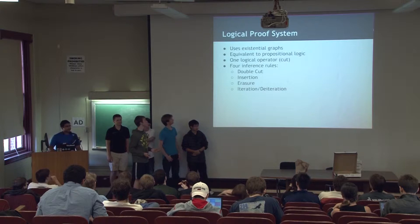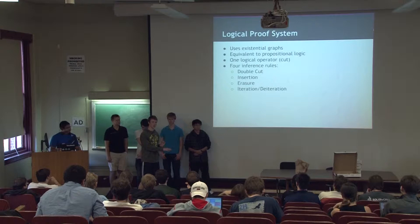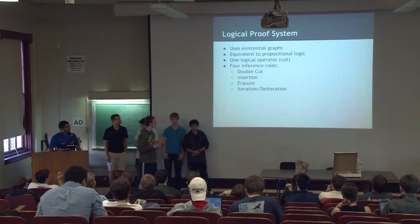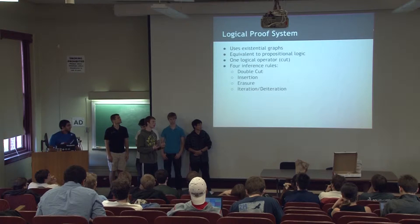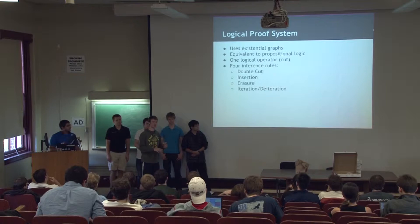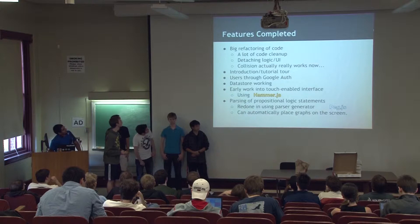Okay, Fierce Logic, otherwise known as existential graphs, is a logical proof system. It's equivalent to propositional logic — any statement you have in propositional logic is an equivalent statement in existential graphs and vice versa. It has one logical operator, which is a cut, which goes around variables. And if two variables or two graphs are next to each other, it's just implicitly a conjunction. There are four inference rules: double cut, insertion, erasure, and iteration/de-iteration. Those are each used in steps in the proof for existential graphs.